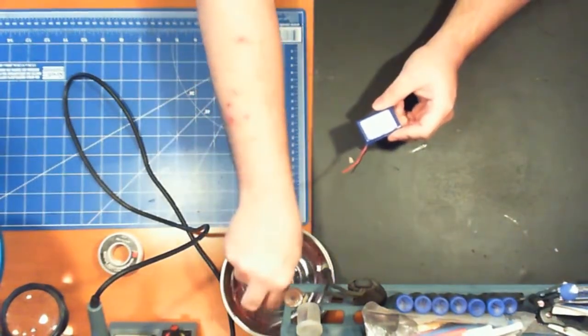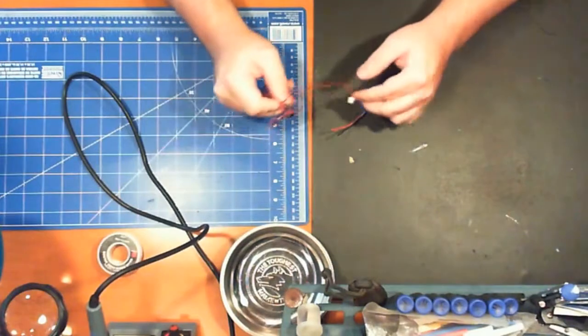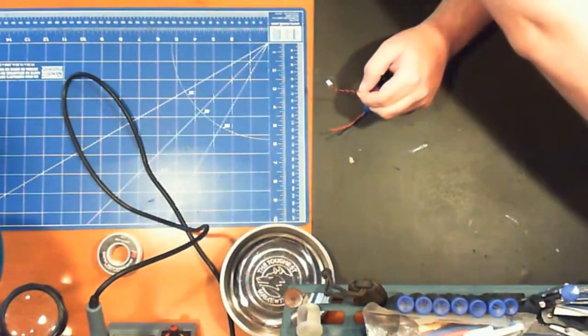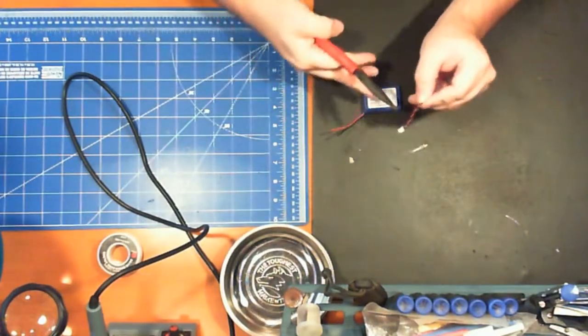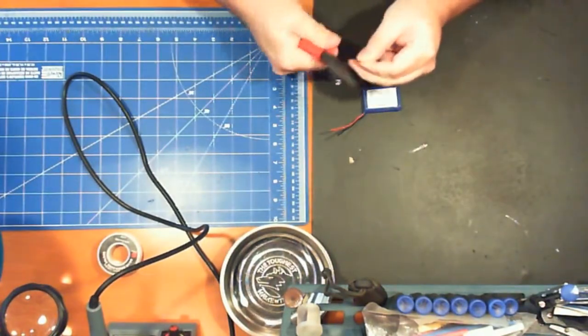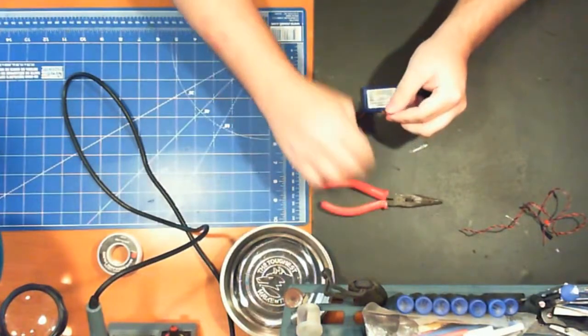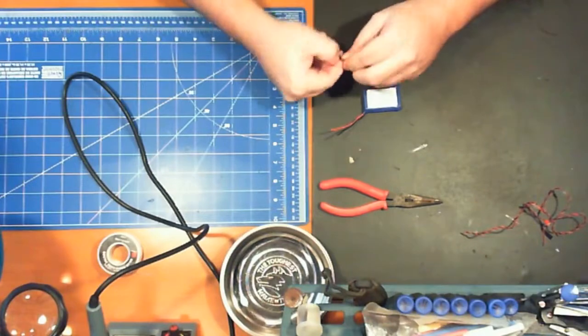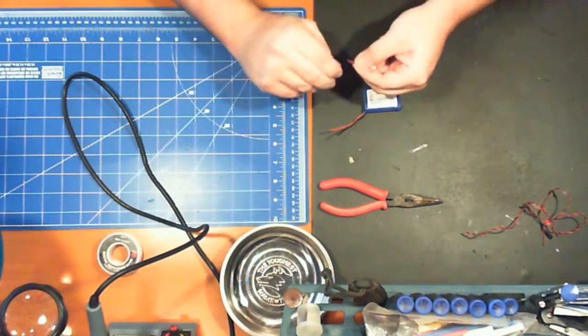So your controller, you're going to need a JST-PH connector. I happen to have one here. So we're going to go ahead and trim that down because we don't want to have too much excess wire. And there is going to be some soldering involved here.